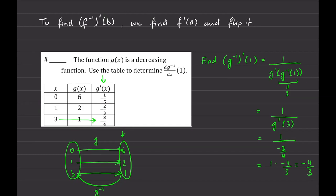Notice that I didn't even have g explicitly, so I couldn't find g inverse. We're just given a table of values. The key is to remember that g inverse always acts on the output of the function and takes you back to what the original input was. g⁻¹(1) means look in the output column for 1, find the corresponding input is 3, replace g⁻¹(1) with 3, then plug into the derivative column to get g'(3) = −3/4, and flip: the answer is −4/3.